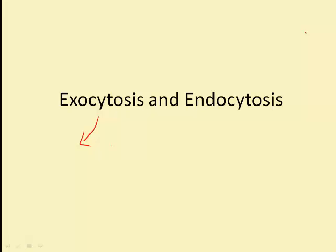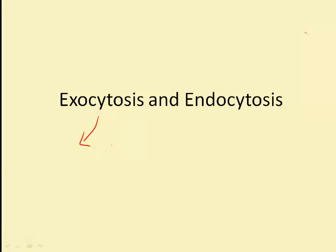Endocytosis imports macromolecules into the cell by forming vesicles derived from the plasma membrane. The vesicle forms from a localized region of plasma membrane that sinks inward and pinches off into the cytoplasm. It's used by cells to incorporate extracellular substances. Let's take a look at endocytosis first.